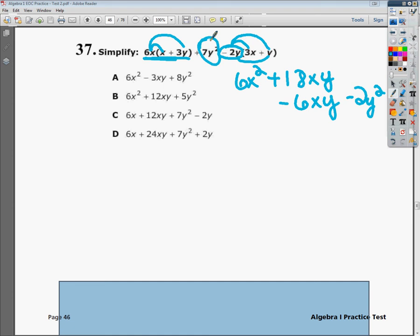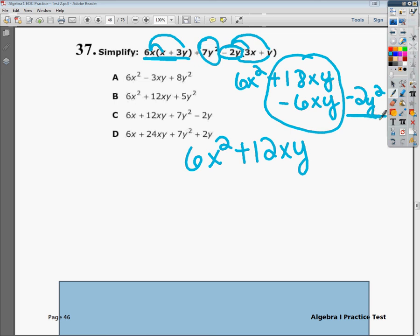Now I'm going to start cleaning up and finding my like terms. I see I have a 6x², and nowhere else on the board do I see a 6x², so I'm going to write it down: 6x². Then I lined up my like terms here, so I just got to do 18 minus 6, which gives us 12, so I got 12xy. I got this negative 2y² sitting out here by itself, but I also notice if I drag this guy over, I got a 7y². So 7y² minus 2y² is 5y².